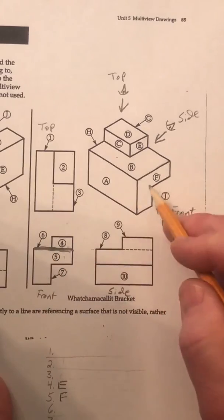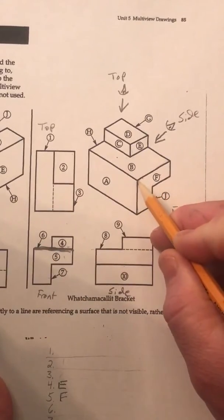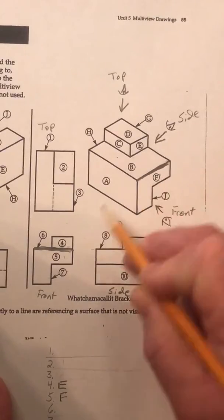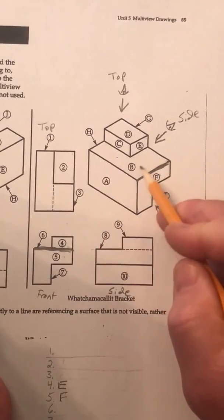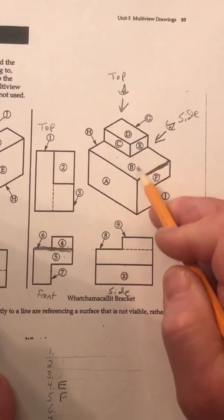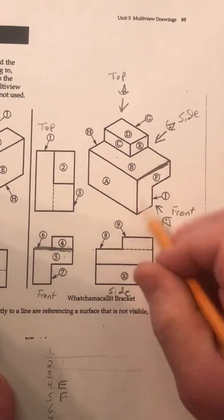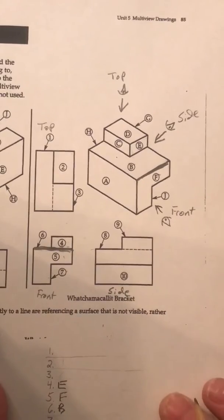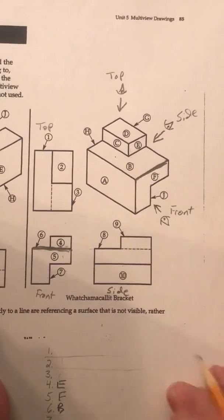So, if I move that up here and look at it from this perspective, so this is that line, and of course, 6 is pointing to that surface, which means 6 corresponds with the letter B. So, I'm going to go ahead and I'll write out B for number 6.